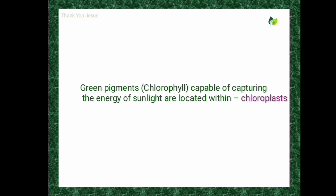Each chlorophyll molecule contains a four-ring head and a phytol tail. The four-ring head contains four pyrrole rings connected to a central magnesium atom. The phytol tail contains a chain of nearly 20 carbons.